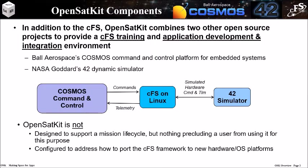In addition to the CFS, OpenSatKit combines two other open source tools to meet these objectives. It uses the Ball Aerospace COSMOS Ground System, and NASA's 42 Simulator. COSMOS sends commands to the CFS and receives telemetry. And simulated hardware command and telemetry is transferred between the CFS and 42.